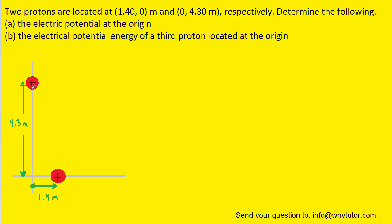So we have one proton located 4.3 meters vertically from the origin, and the second proton is 1.4 meters horizontally from the origin.